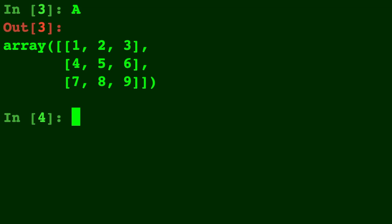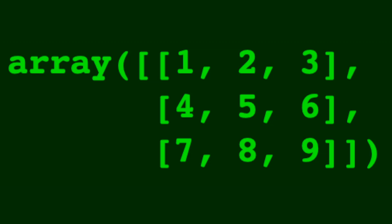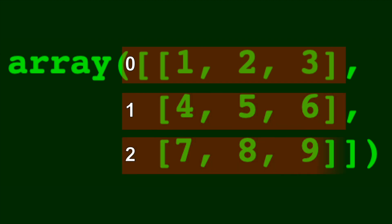The way these arrays are organized makes me so happy because you can access any element that you want inside of the array. Let's talk about indexing. The way this array is organized is bracket, row, comma, column. The first row is accessed as zero, the second row is one, and the third row, you might have guessed it, is two.